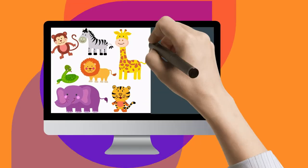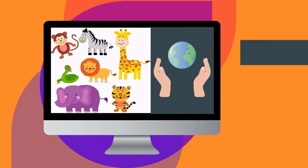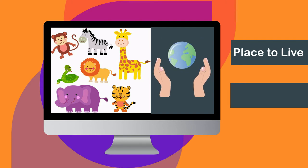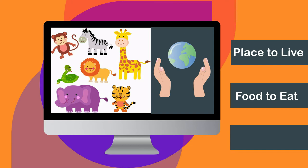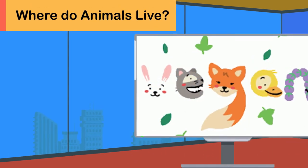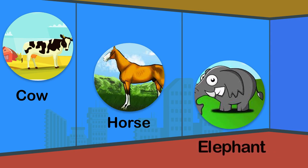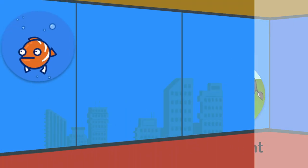There are many types of animals on Earth and each type of animal has a specific place to live, specific food to eat, and specific nature.